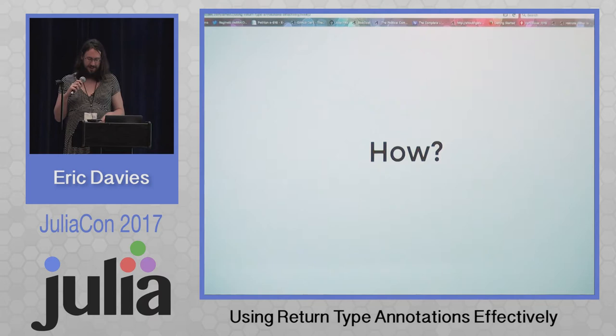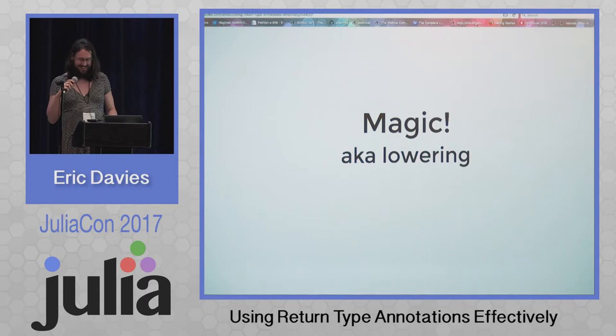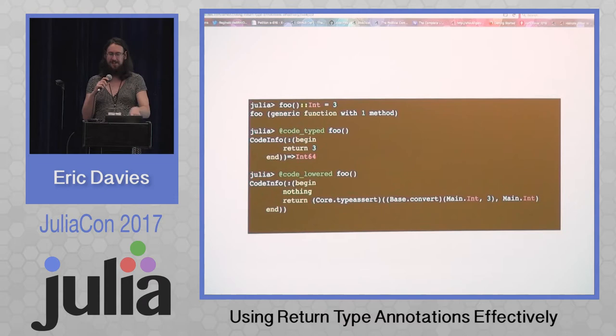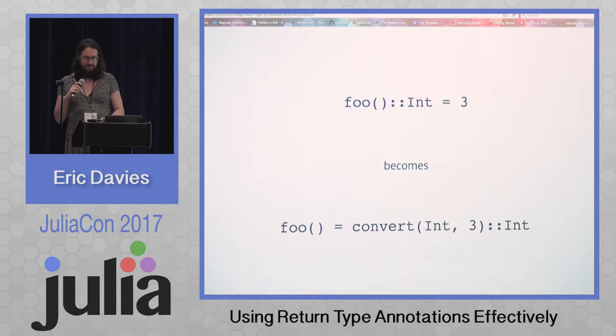I think it's important to know how these tools work, so I'll explain how this works under the hood. It's magic — which means lowering. Jameson talked about it a bit earlier. It's a compilation phase that translates the Julia code you write into simpler, compiler-friendly Julia code. Here you can actually see, using Julia's wonderful code introspection tools, how lowering has transformed a function with a return type annotation. You can see it calls convert, then has a type assert that ensures that it converted to that type. So these two function definitions are equivalent — they generate the exact same lowered code.